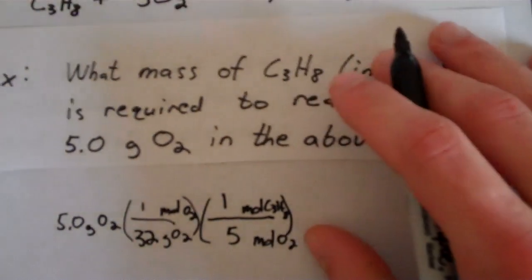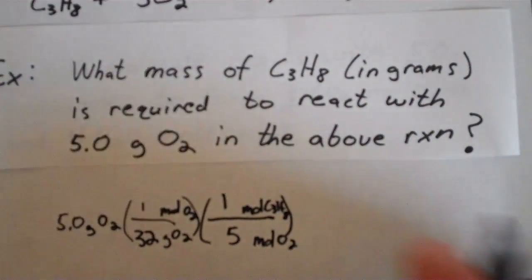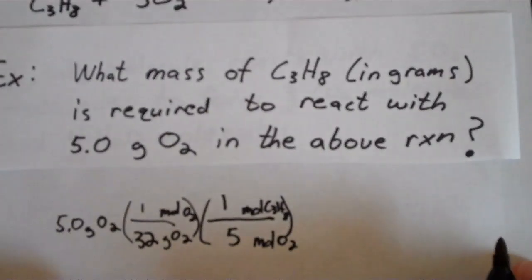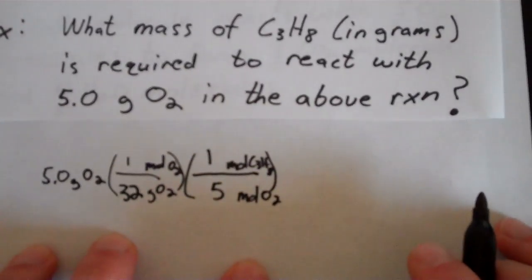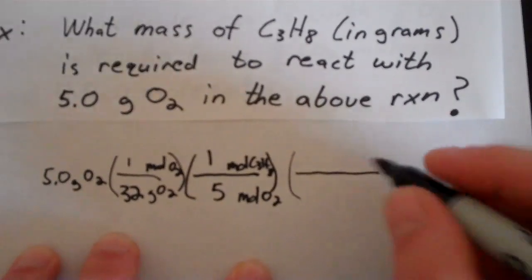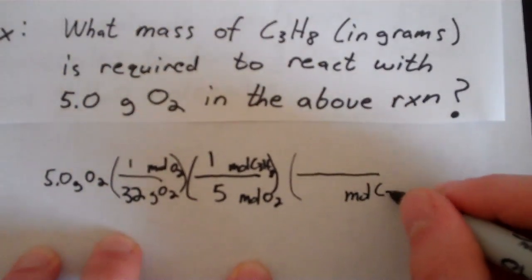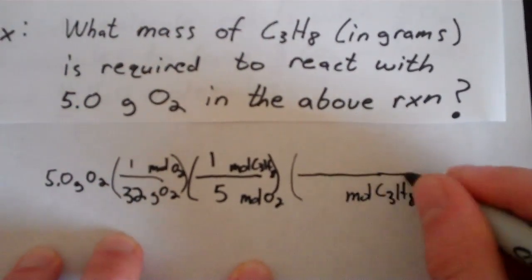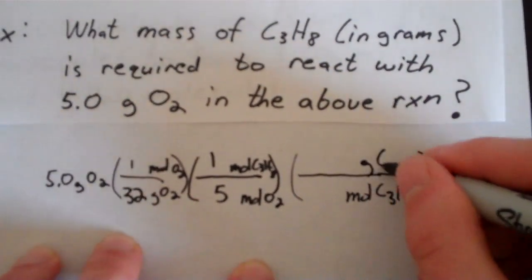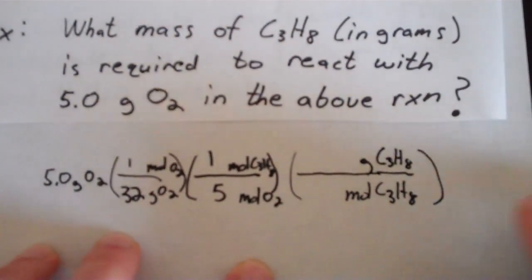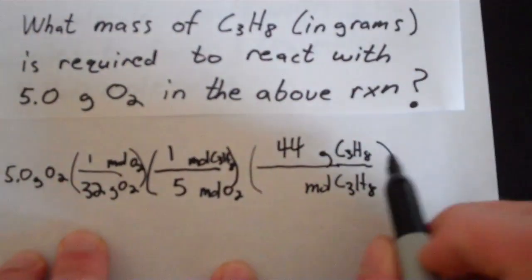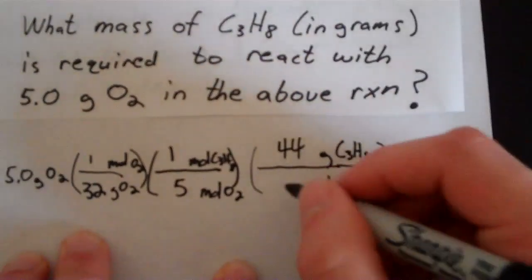So now we have moles of propane. But the question doesn't really ask for that, though. It asks for the mass of propane in grams. So we have to set up yet another conversion factor. So now we have moles of propane on the bottom, and now we have grams of propane on top. And it turns out that there are about 44 grams of propane per 1 mole.